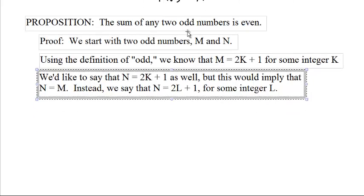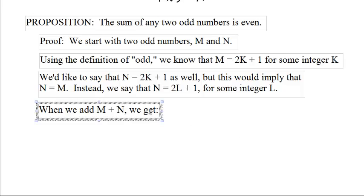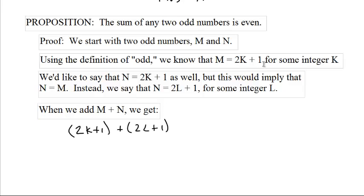Anyway, we want to prove that the sum of these two numbers is even. So, if we add the two numbers, m and n, m plus n, we get the same thing as 2k plus 1 plus 2l plus 1.